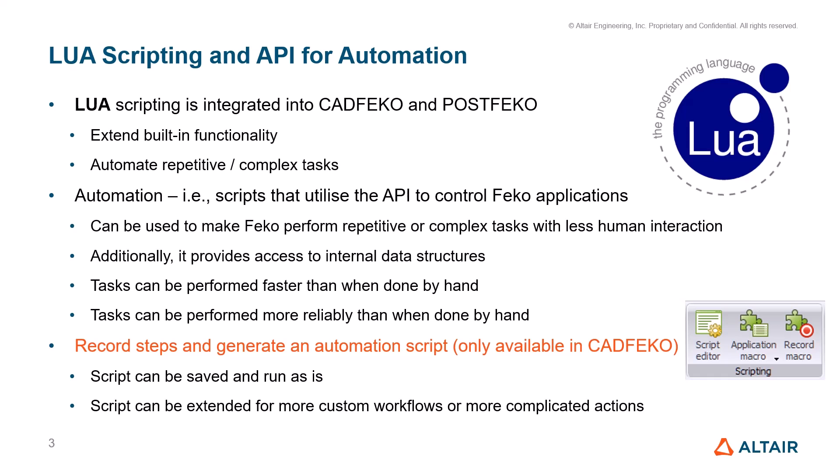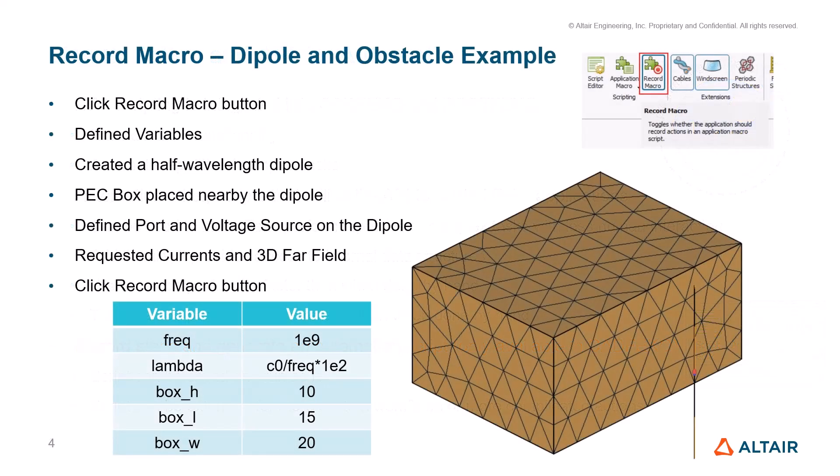Going over the record macro feature: I clicked the record macro button, defined my variables for the model, created the half wavelength dipole and a PEC box to serve as the obstacle nearby the dipole, then defined a port and voltage source on the dipole itself, and made current and 3D far field requests. Once done, I clicked the record macro button again and this generated the LUA script that I can then run or modify.